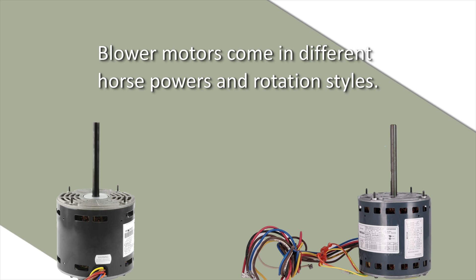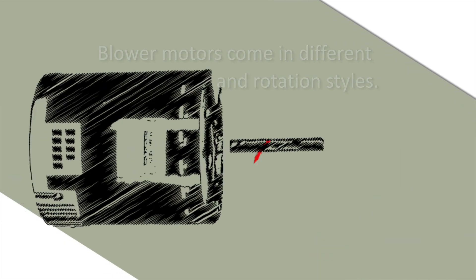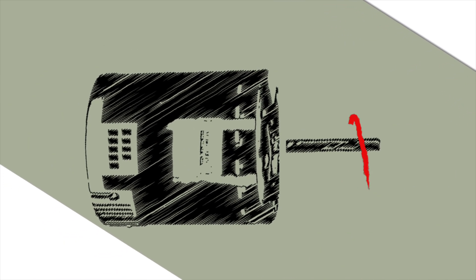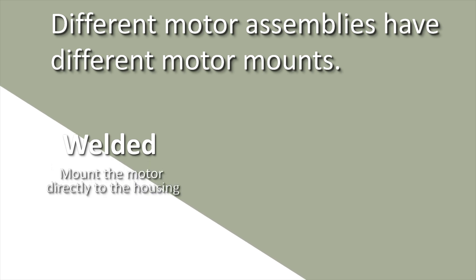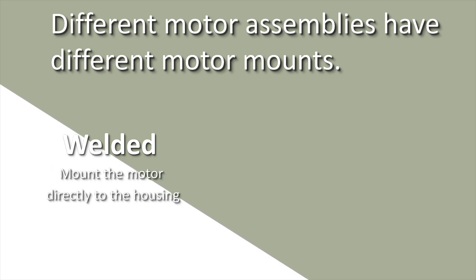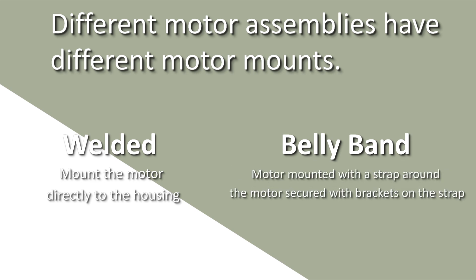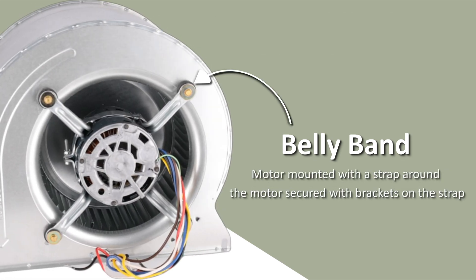Blower motors come in different horsepowers and rotation styles. Some motors rotate in one direction, some in the other, and some rotate in both directions. The motors also differ by shaft size and length. Different motor assemblies have different motor mounts. Some motors have welded mounts that mount the motor directly to the housing, while others have a belly band motor mount, which is a motor mounted with a strap around the motor, secured with brackets on the strap, such as our OEM Protech motors.